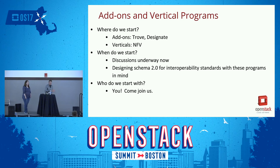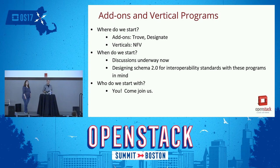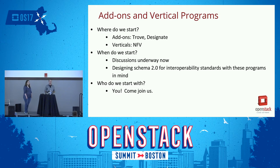So, where do we start? For add-on programs, we're working mostly with Trove and Designate right now. For vertical programs, we're looking at NFV as the first use case. That's not a final list — walk first, then run. We've just finished a lot of the scoring work on the next OpenStack interoperability guidelines, so we can now get underway with add-ons and verticals. We're also working on a new version of the schema we use to define interoperability guidelines, which is currently under review.